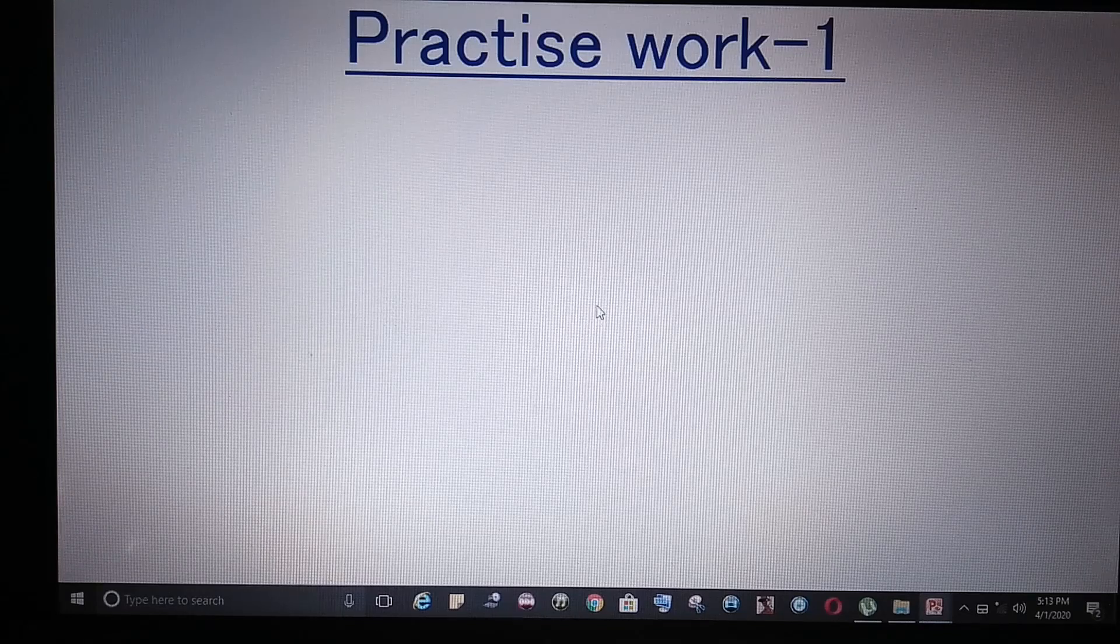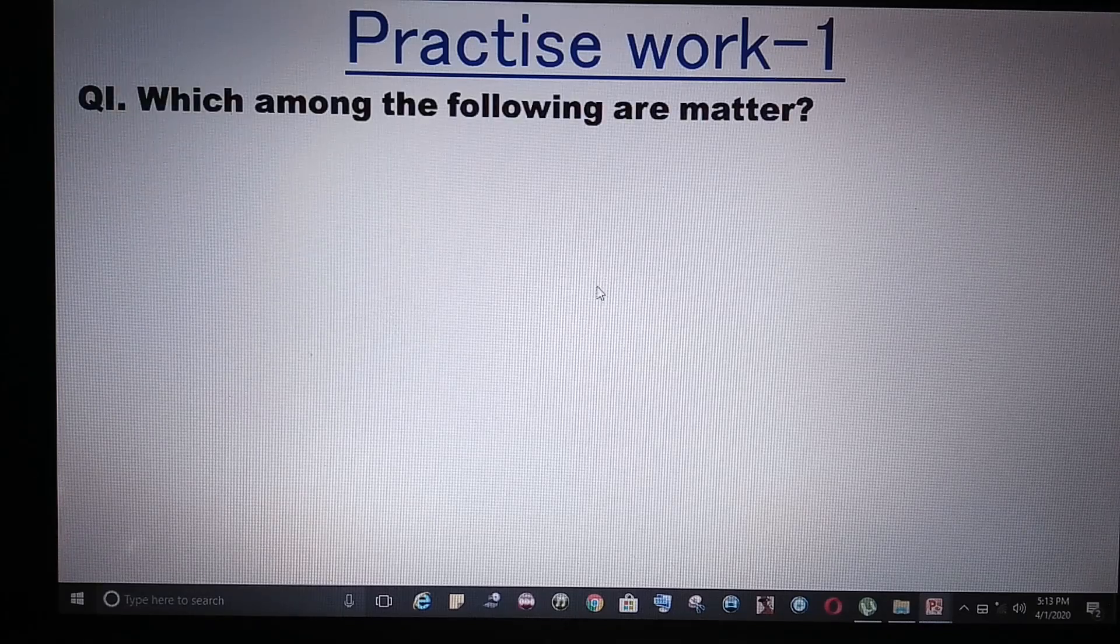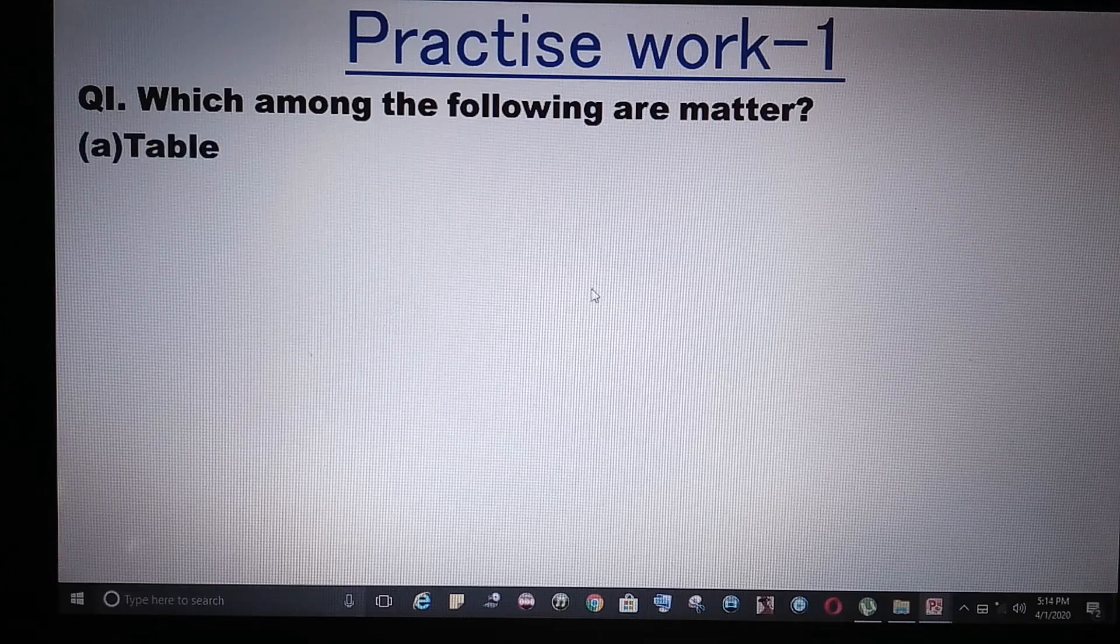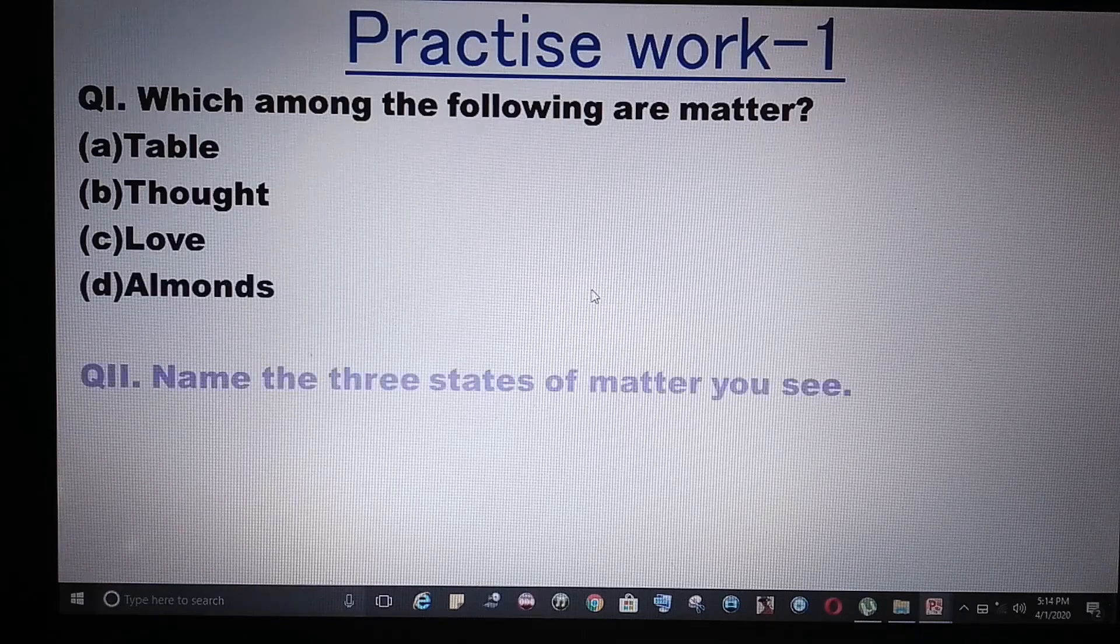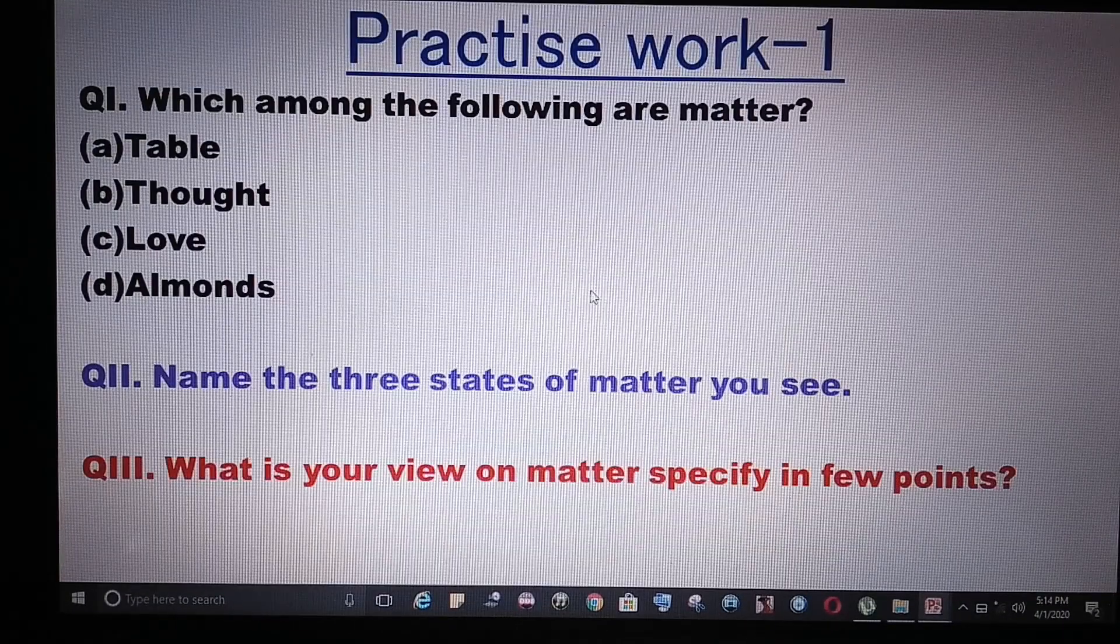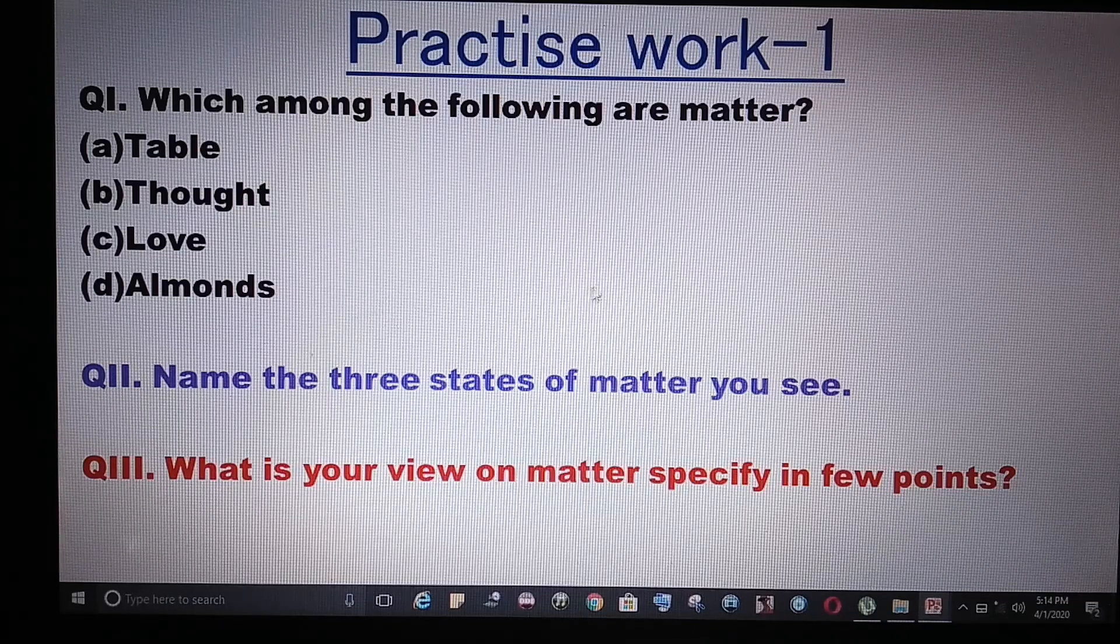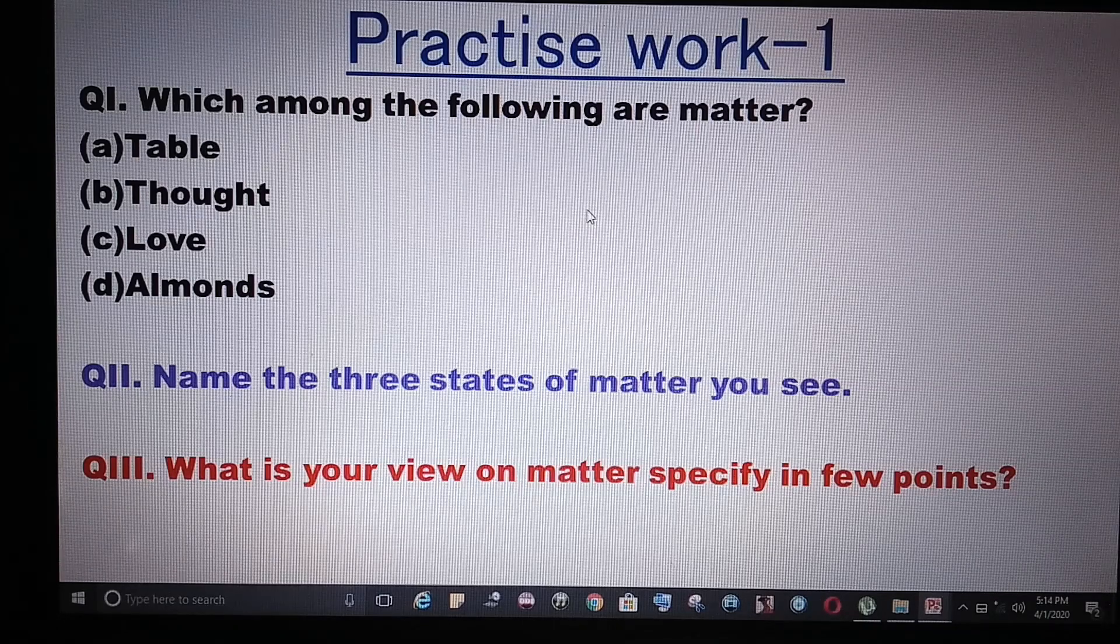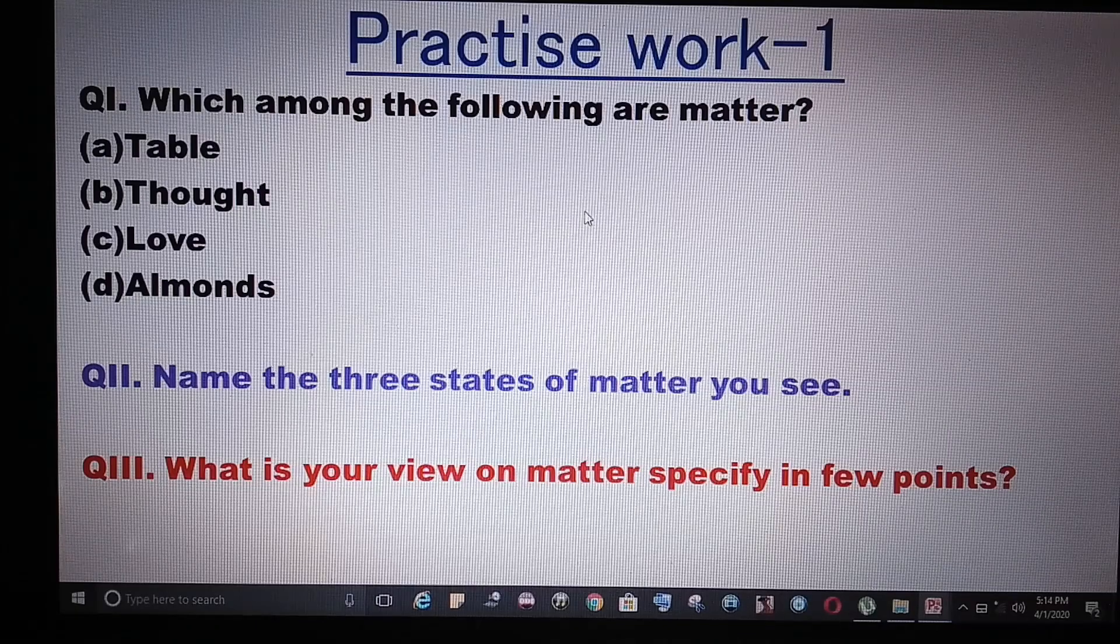Let us go with the practice work. You have to tell which among the following are matter: table, thought, love, almonds. Name the three states of matter. What is your view on matter? Specify your viewpoint. This is practice work. You have to answer these questions in your chemistry notebook. You have to make a fresh chemistry notebook.